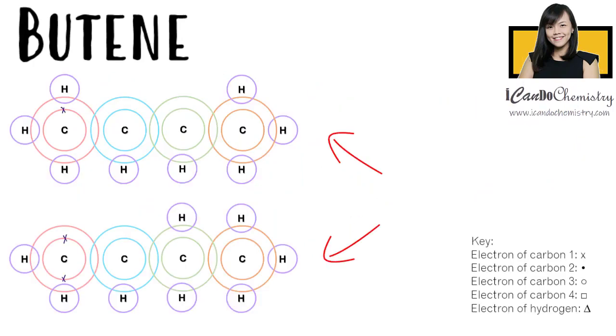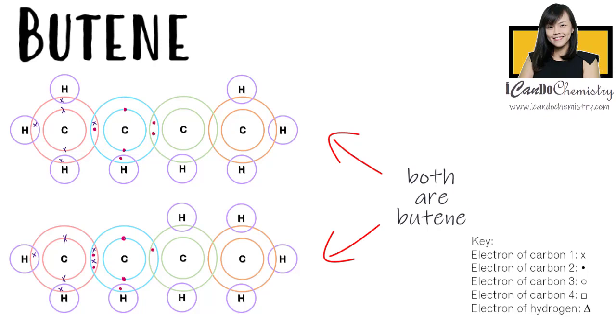What about butene? Butene has four carbons. This is the dot and cross diagram of butene. Let's replace each electron pair with a bond. There you go, we have achieved the structure of butene.